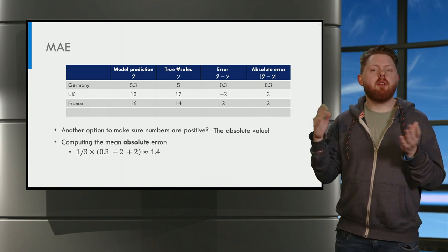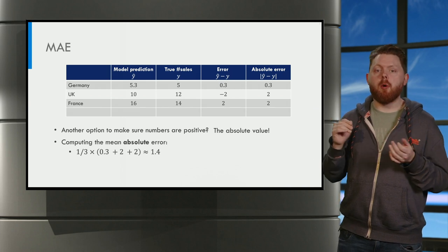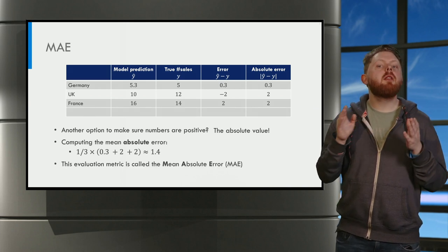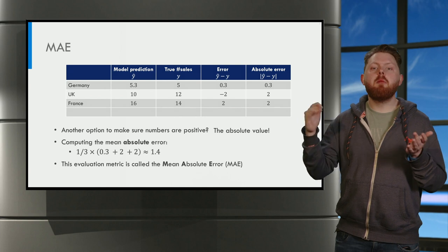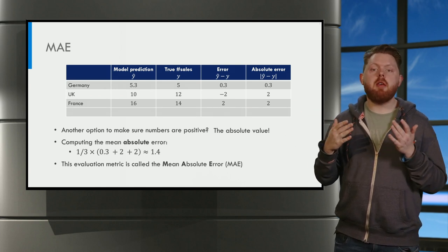If we average these numbers, we find 1.4. This metric is called the mean absolute error, or MAE.